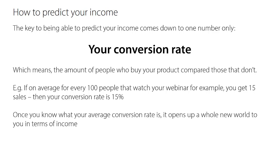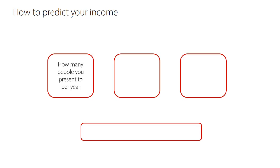By the end of this video you're going to be really excited, because if you haven't thought about it this way before, you're going to get an aha moment. Here's how to predict your income — here's the equation you want to write down. To predict your income, all you have to do is know or estimate how many people you present to per year. That number is the first part of the equation for predicting your income.